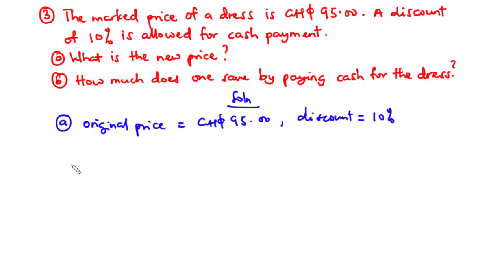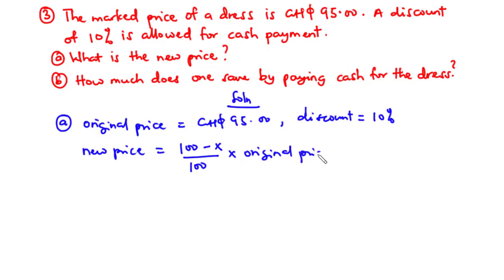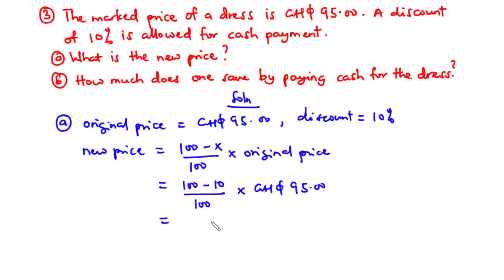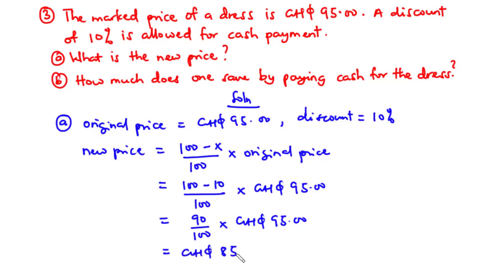For part a, the new price equals (100 minus x) divided by 100, times the original price. That is (100 minus 10) divided by 100, times 95 Ghana cedis — which is 90 over 100 times 95 Ghana cedis — giving a new price of 85 Ghana cedis 50 pesewas.